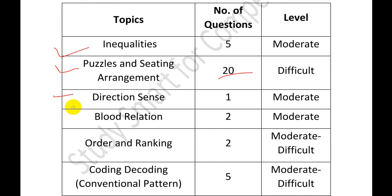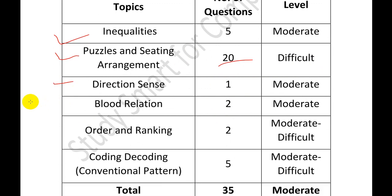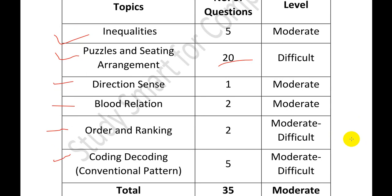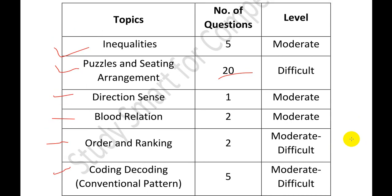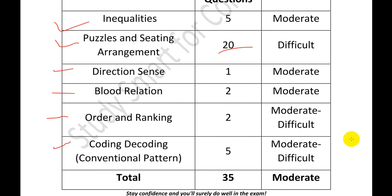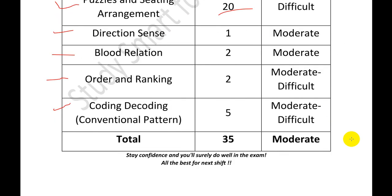Other reasoning topics included: direction sense — 1 question, blood relations — 2 questions, order and ranking — 2 questions, and coding-decoding conventional pattern — 5 questions. Syllogisms were not there; coding-decoding appeared instead. You cannot have a fixed expectation of what will come — it totally depends on your shift's questions and luck. The type of questions varies per exam.